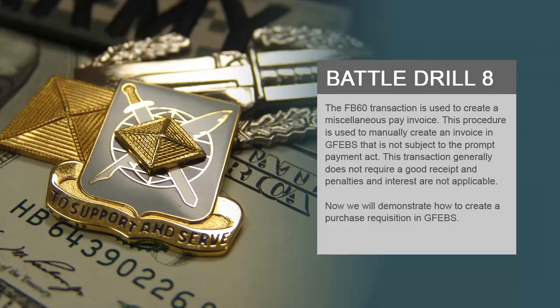The FB60 transaction is used to create a miscellaneous pay invoice. This procedure is used to manually create an invoice in GFIBS that is not subject to the Prompt Payment Act. This transaction generally does not require a goods receipt, and penalties and interest are not applicable.